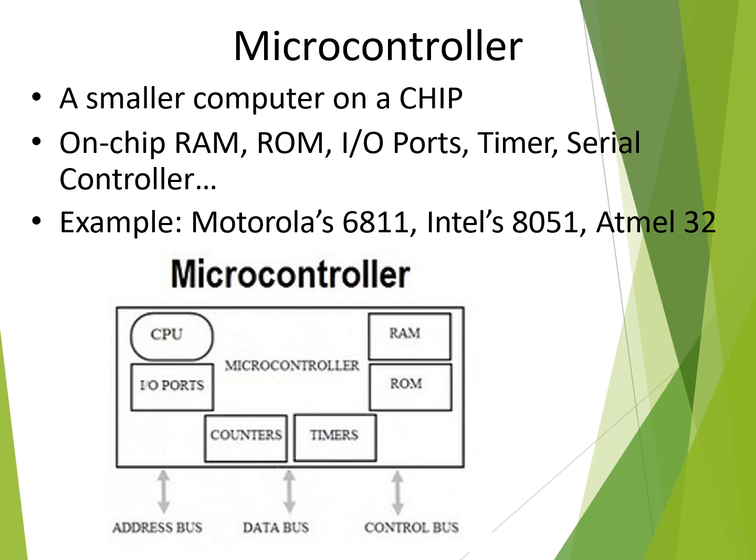A microcontroller, within a single chip, has your processor along with RAM, ROM, IO ports, timers, counters, and serial port — all put together into a single chip. That is what we call a microcontroller. So your microcontroller consists of your microprocessor along with memory — that is RAM, ROM, IO ports, serial interface, and timers — all integrated into a single IC.